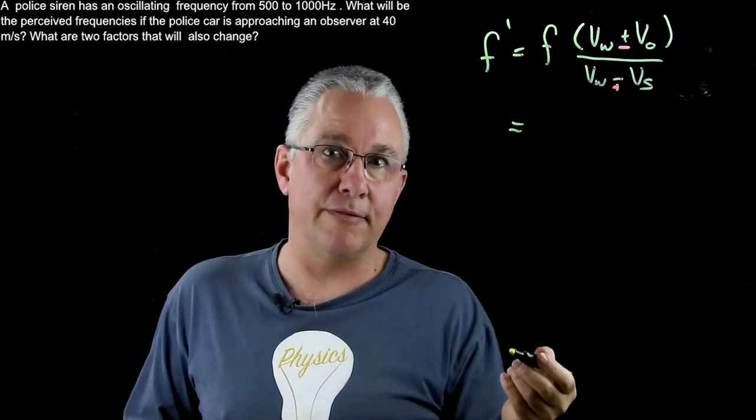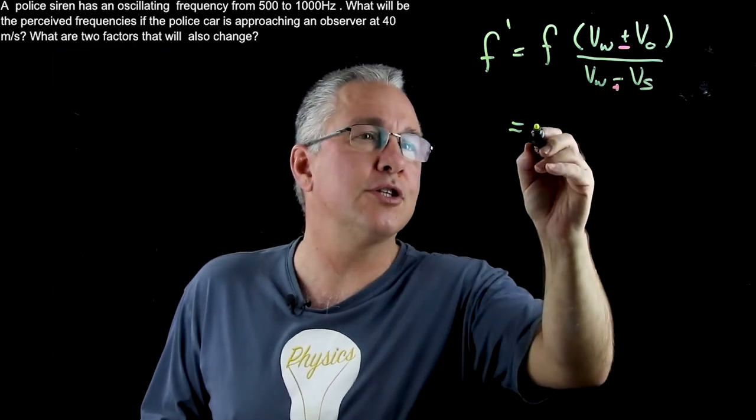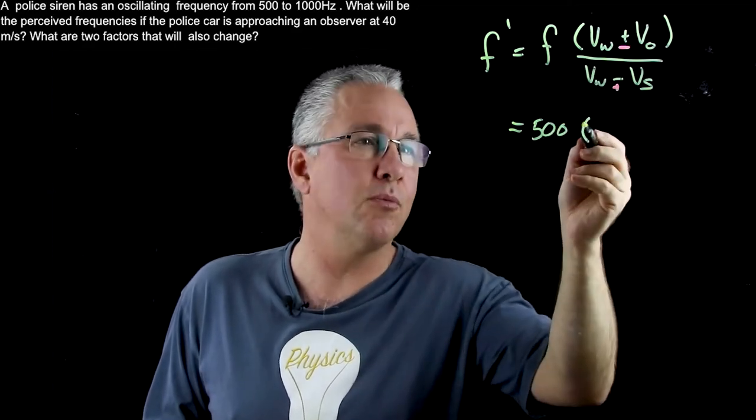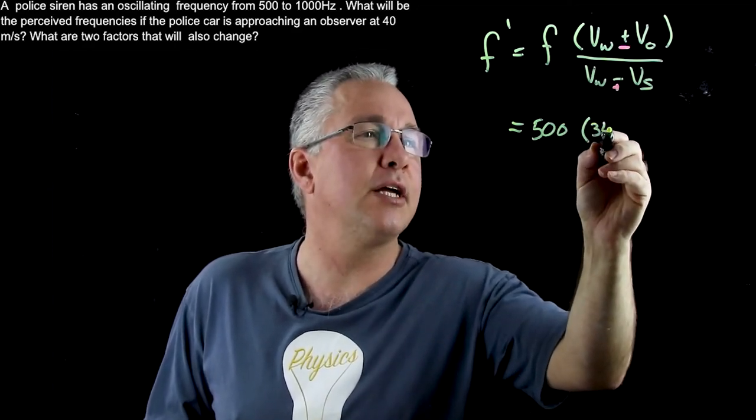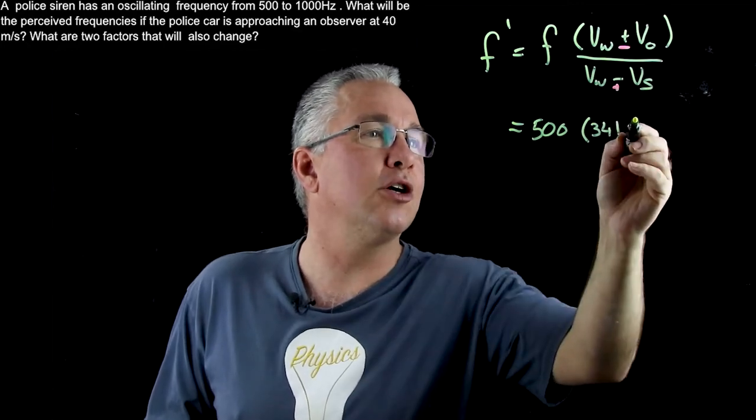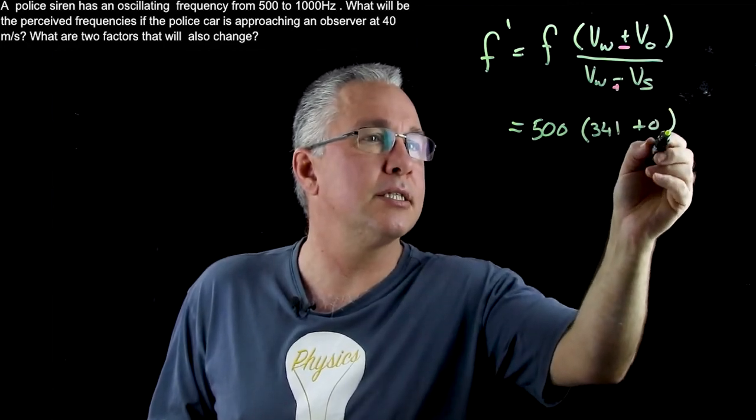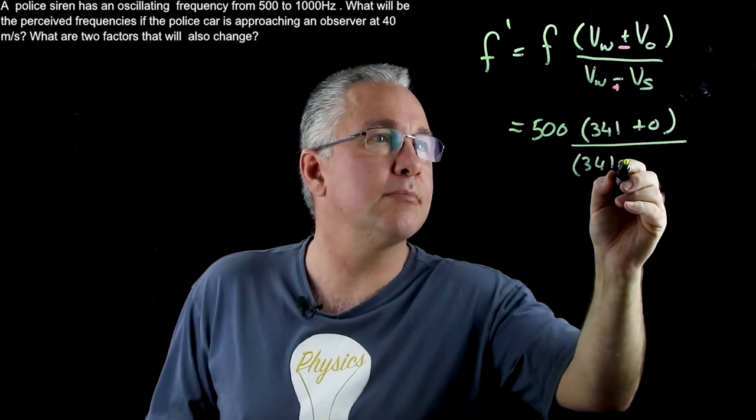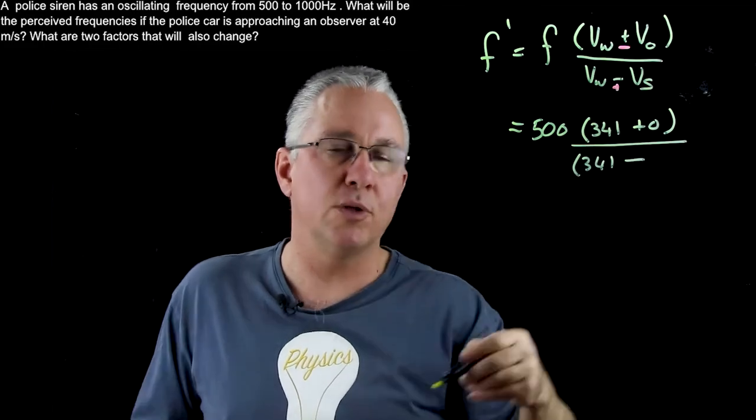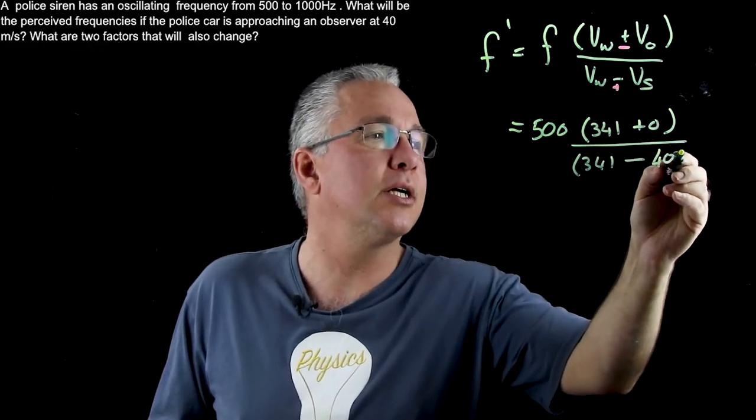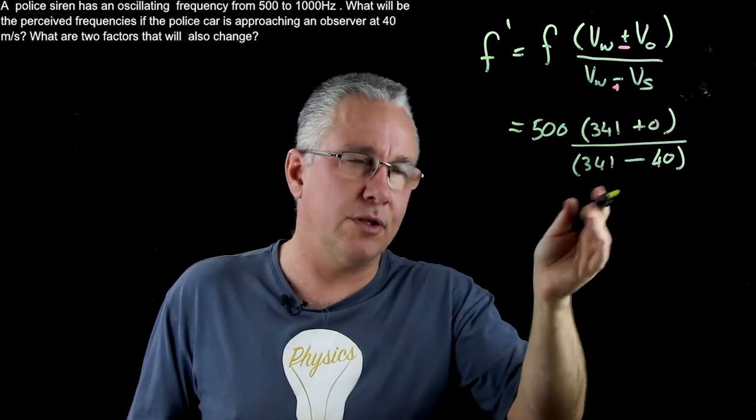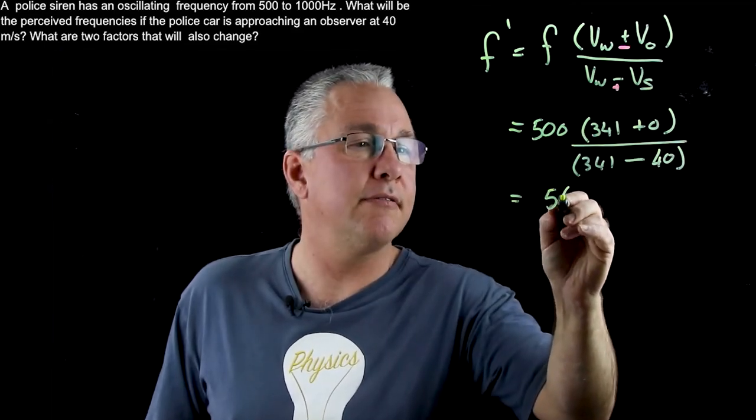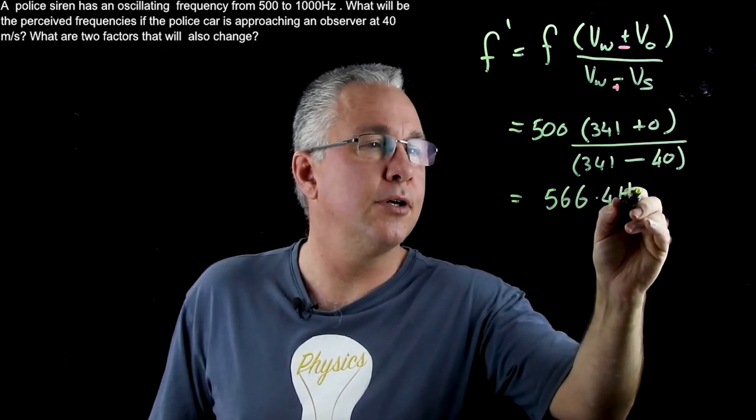Now all we need to do is write down all the values we've got. I'm going to do this first of all only for 500. Now the velocity of the wave is the velocity of sound. So we're going to make that 341. The observer is not moving so this is going to be simply plus zero. And then this is divided by the 341 and now it's minus the velocity of the source. We're told that the police car is moving at 40 meters per second. So we're going to do 40. And I've left off the units here. You know there should be units there of course. And when you calculate that out you're going to get a value of 566.4 Hz.